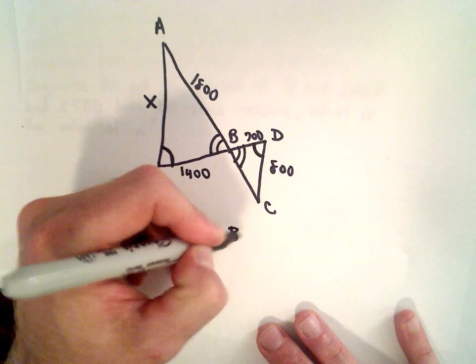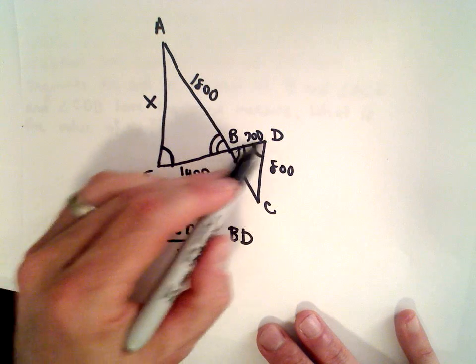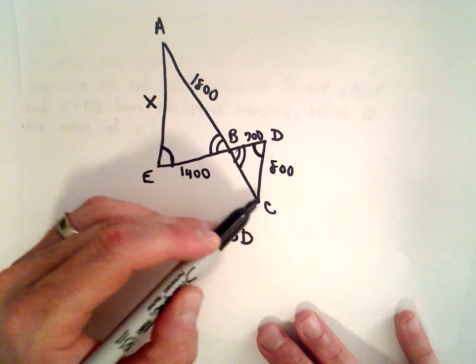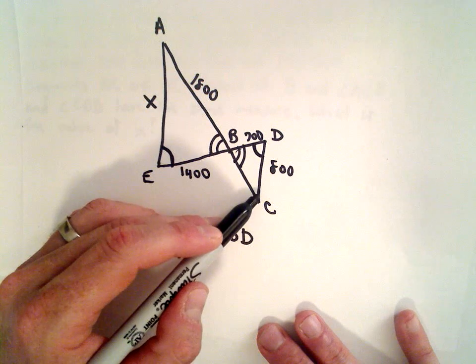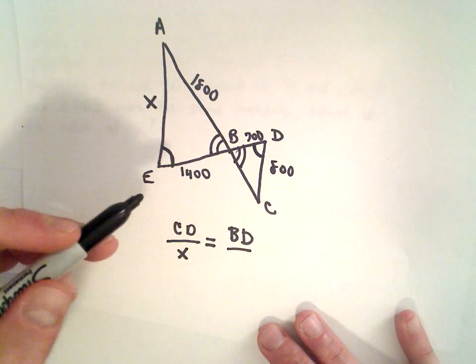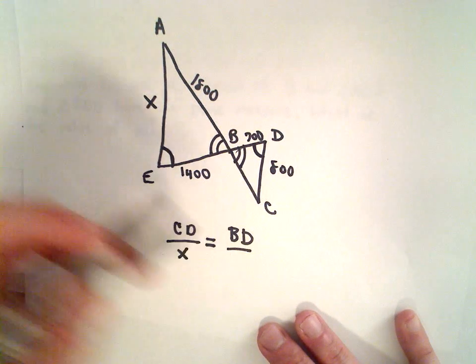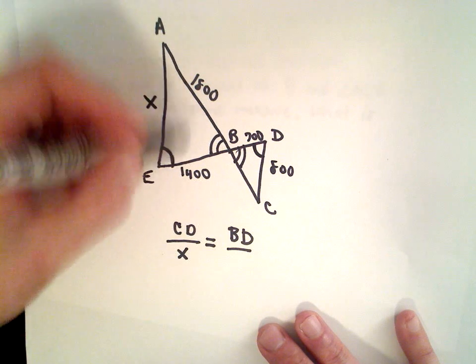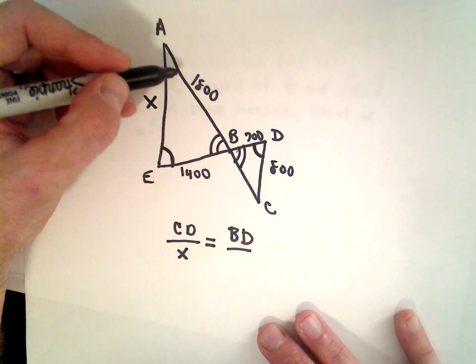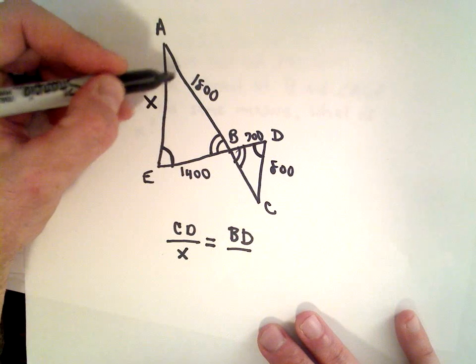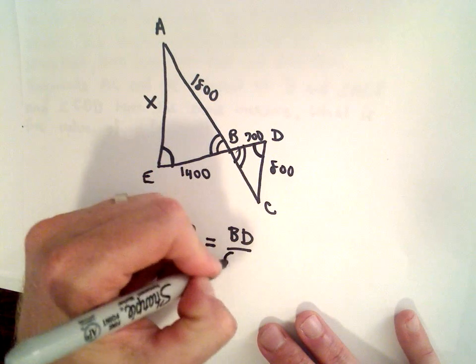That's going to equal BD, so BD is the side length opposite this angle that we didn't label, and we can divide that by EB, which will be—again, if we look at the other triangle, if we look at the angle that we didn't label, if we look at the side opposite, that'll be EB.